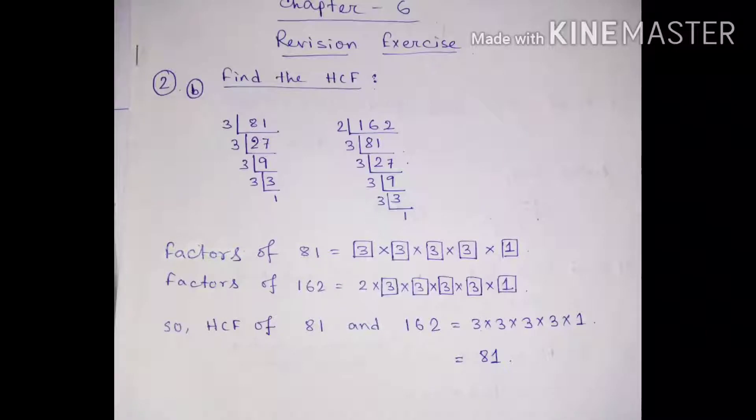So after repeated division we got the factors of 81 and factors of 162 that we have listed out. And after listing them out, we just took the common factors of both the numbers, that's four 3's and one 1. And after multiplying these factors we get 81.